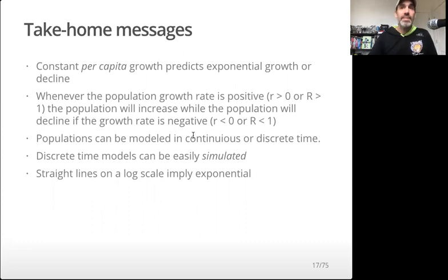We can model populations in either continuous or discrete time. These discrete time models can be easily simulated. So instead of having to solve them analytically, though there are ways to solve them analytically, we can easily solve them numerically by just setting up a for loop. And again, straight lines on a log scale imply an exponential growth or decline on a linear scale.